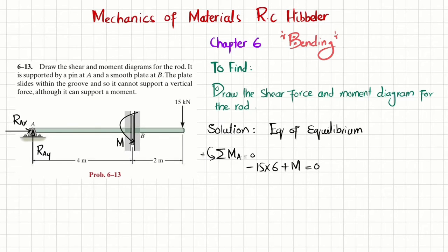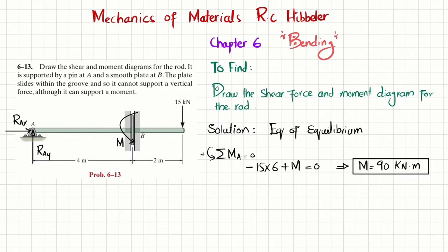Since the 15 × 6 term is clockwise (negative), we get M = 90 kilonewton·meters. Next, we find RAx using the sum of all forces in the x-direction equals zero. Only RAx acts in that direction with no other horizontal force, so RAx = 0.